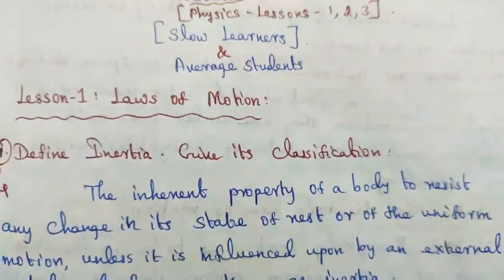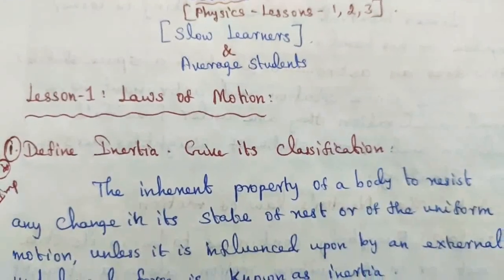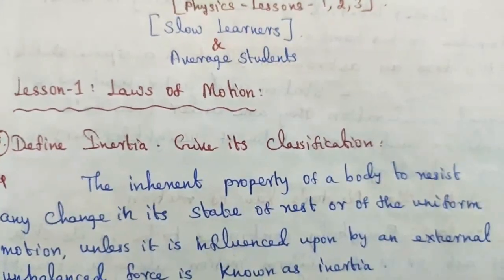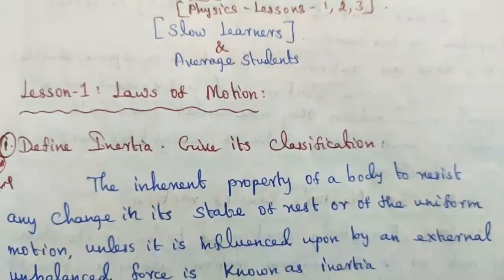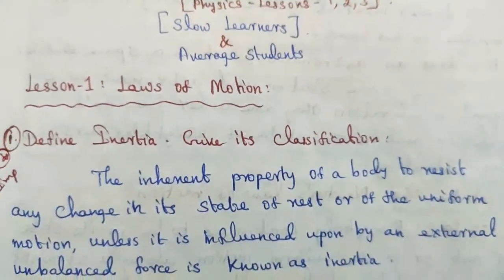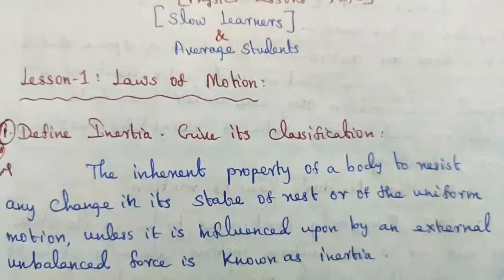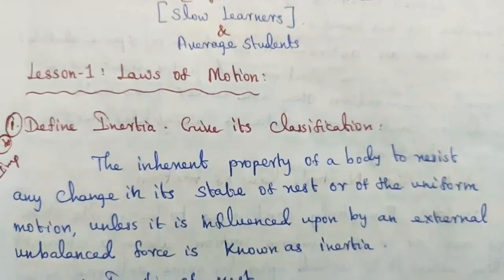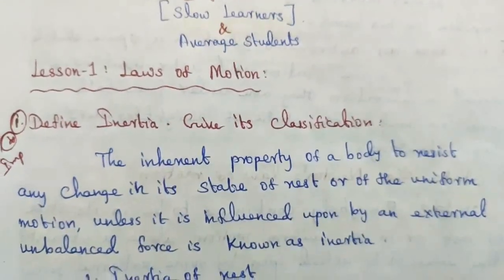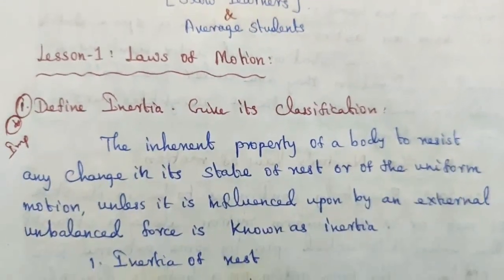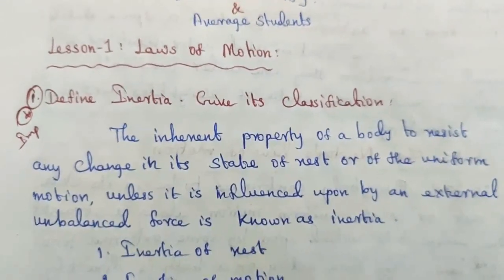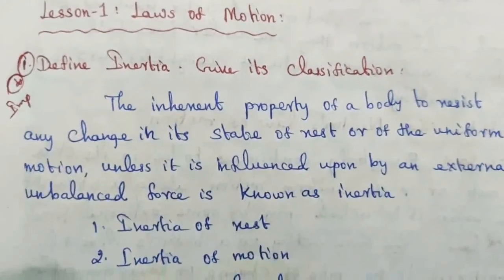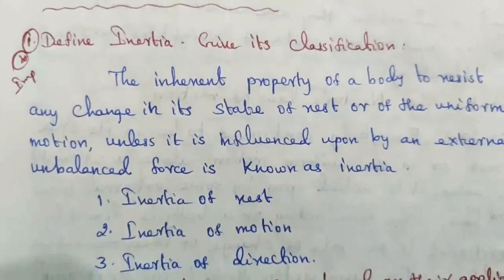The inherent property of a body to resist any change in its state of rest or of uniform motion, unless it is influenced upon by an external unbalanced force, is known as inertia. There are three types: inertia of rest, inertia of motion, and inertia of direction.